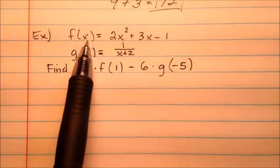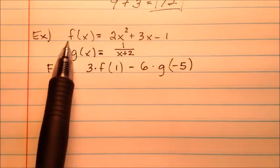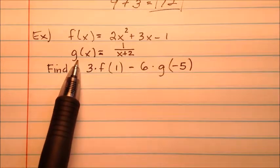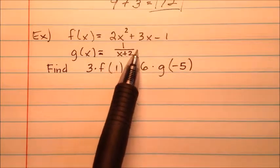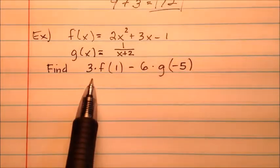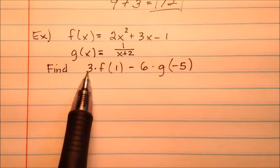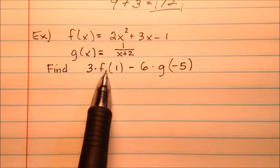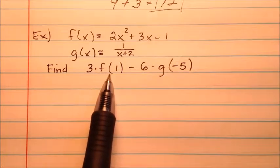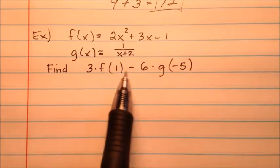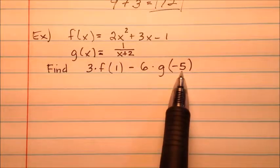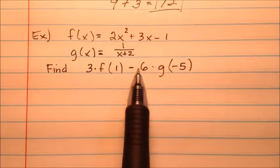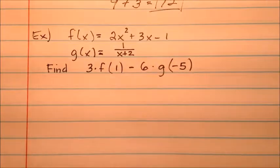In this third example, we have two new function definitions. f will be defined as 2x² + 3x - 1, and g will be defined as 1 over the quantity x + 2. So this one's a little different. We're going to find 3·f(1), which means we need to find what f will be when I evaluate it at 1, and that value will be multiplied by 3, then minus 6·g(-5), so we will evaluate g at negative 5 and multiply it by 6, and then subtract that whole quantity from what we had at the beginning.